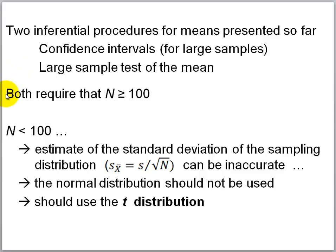Both of these require that the sample size be greater than or equal to 100. When n is less than 100, the estimate of the standard deviation of the sampling distribution can be inaccurate. The normal distribution presumes that this estimate is accurate — and more formally, it presumes that we actually know the standard deviation of the sampling distribution. So when we're using an estimate where there can be some error, the appropriate distribution to use is not the normal or Z distribution, but instead the T distribution.